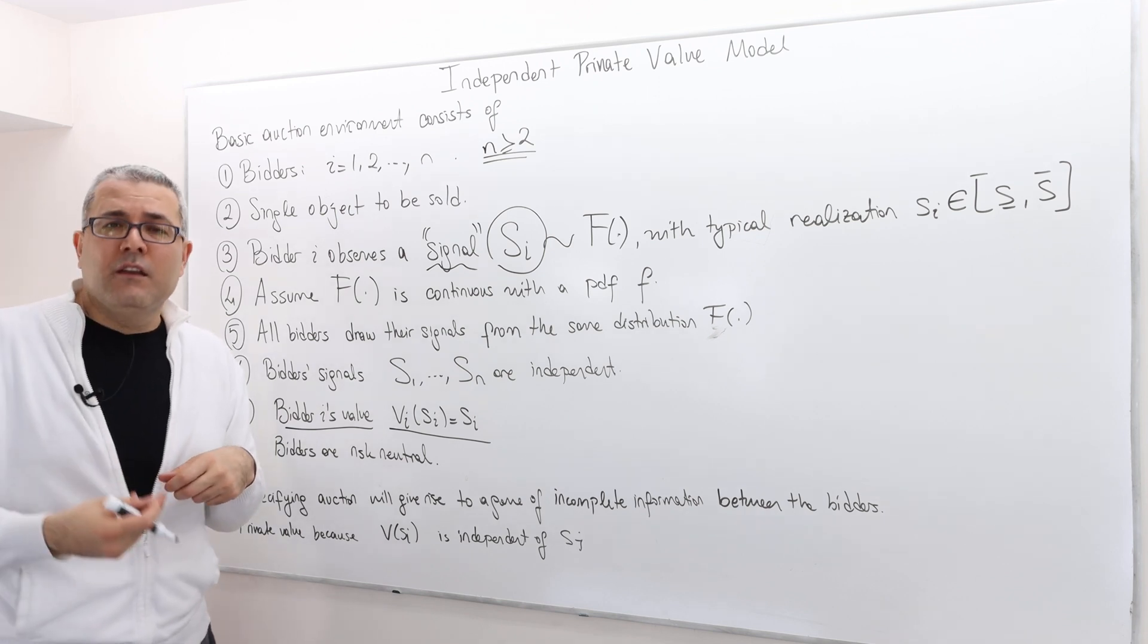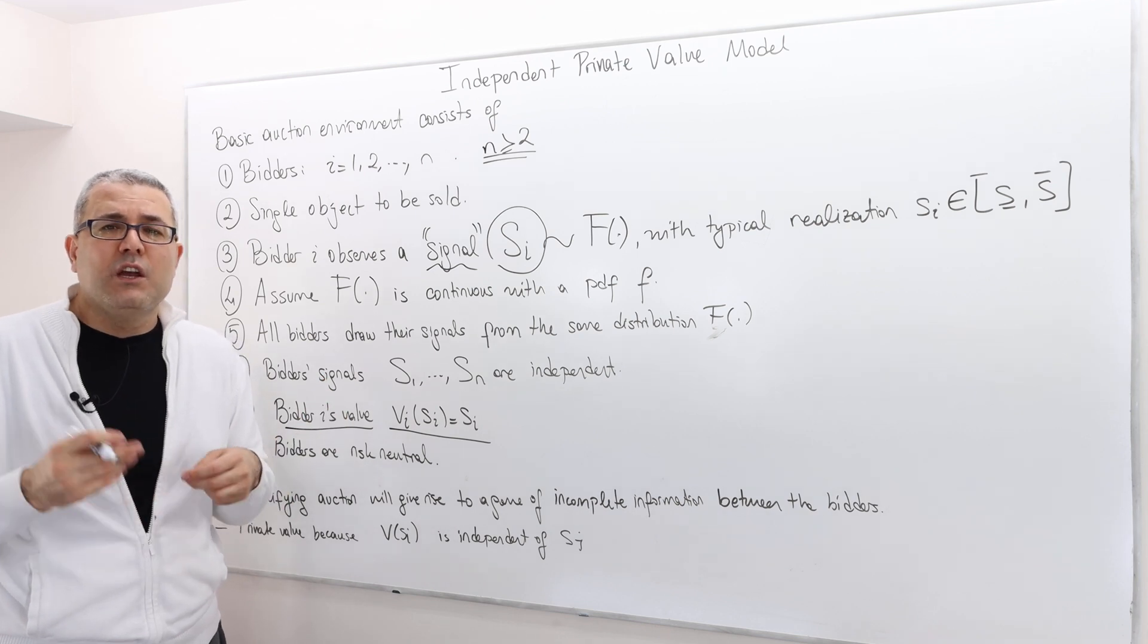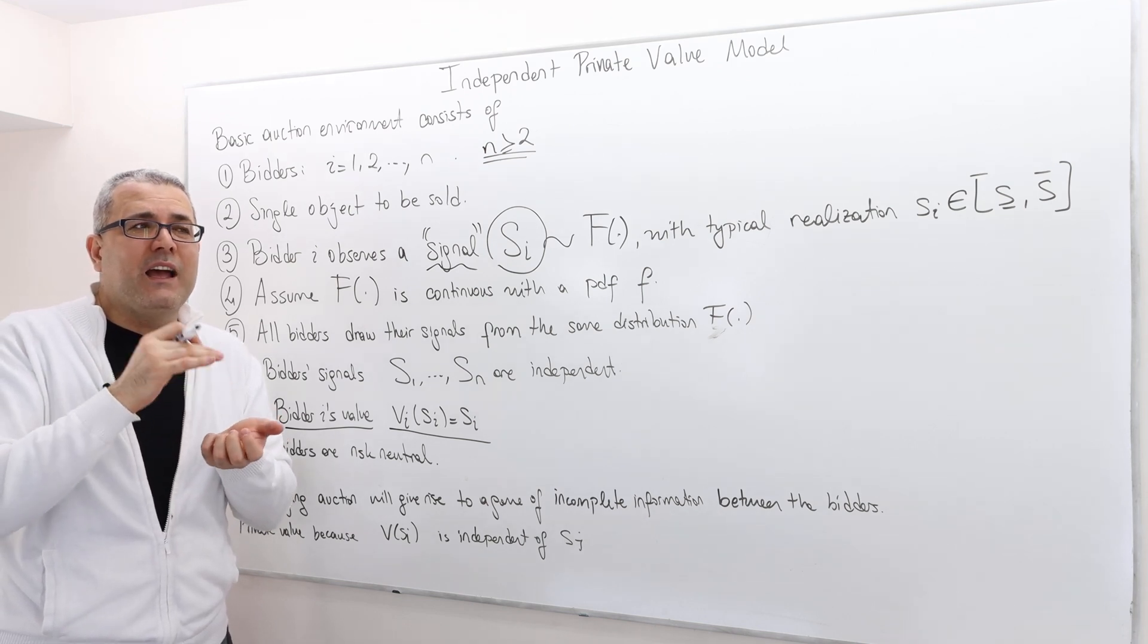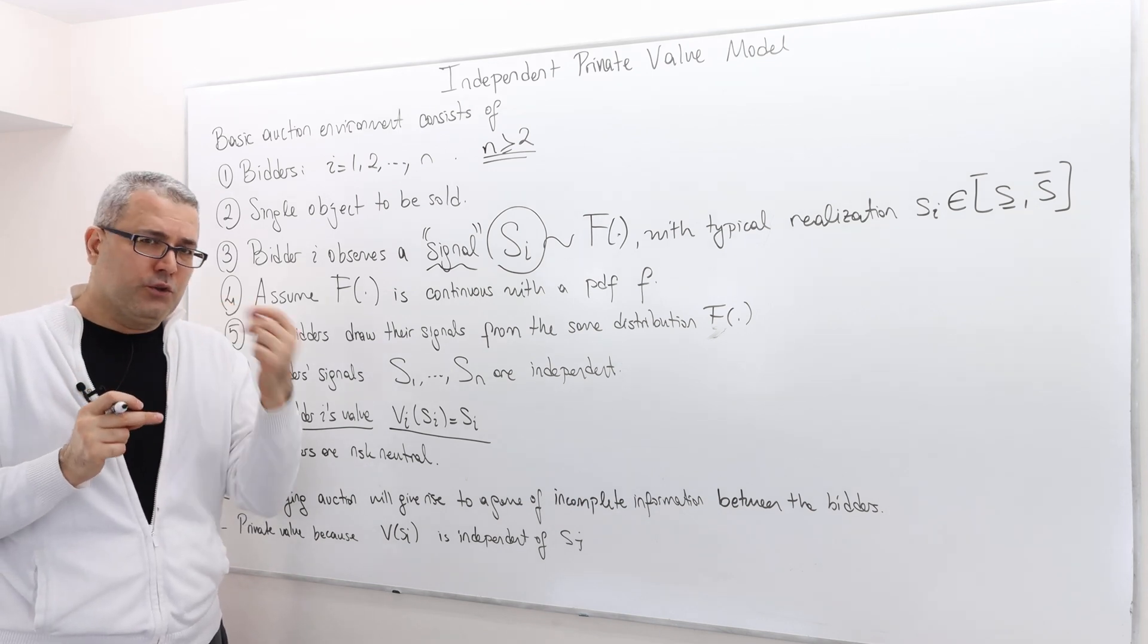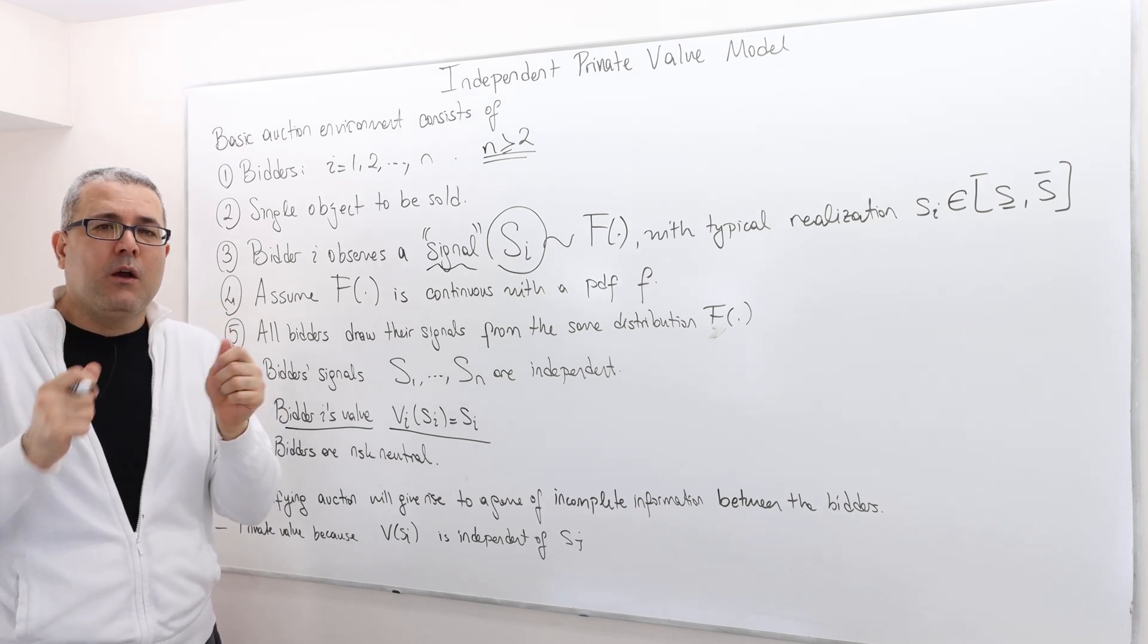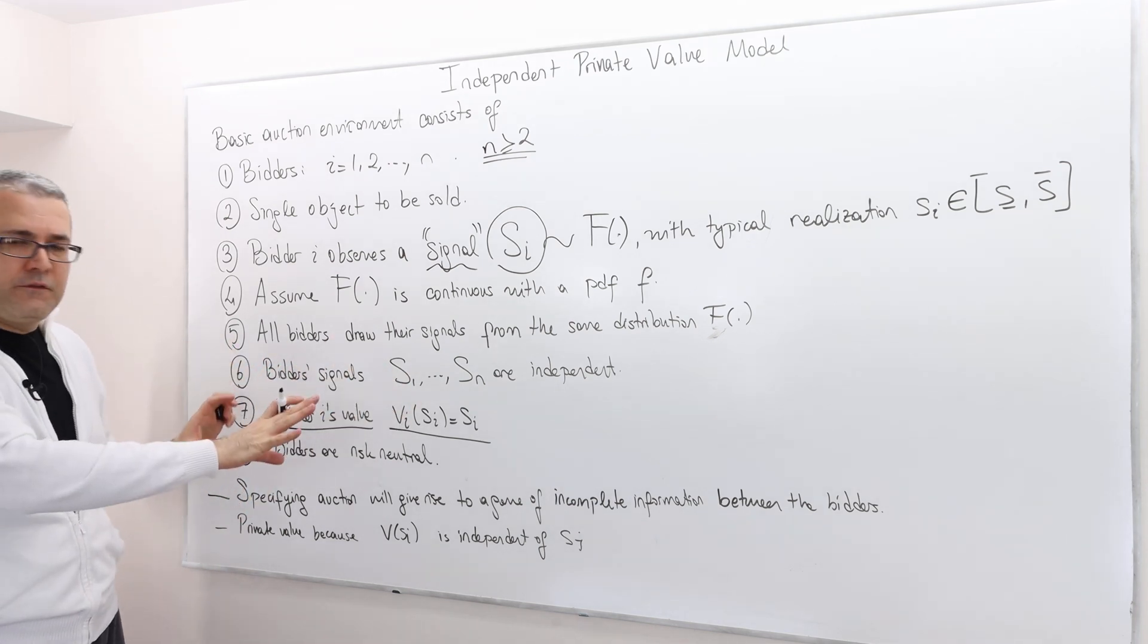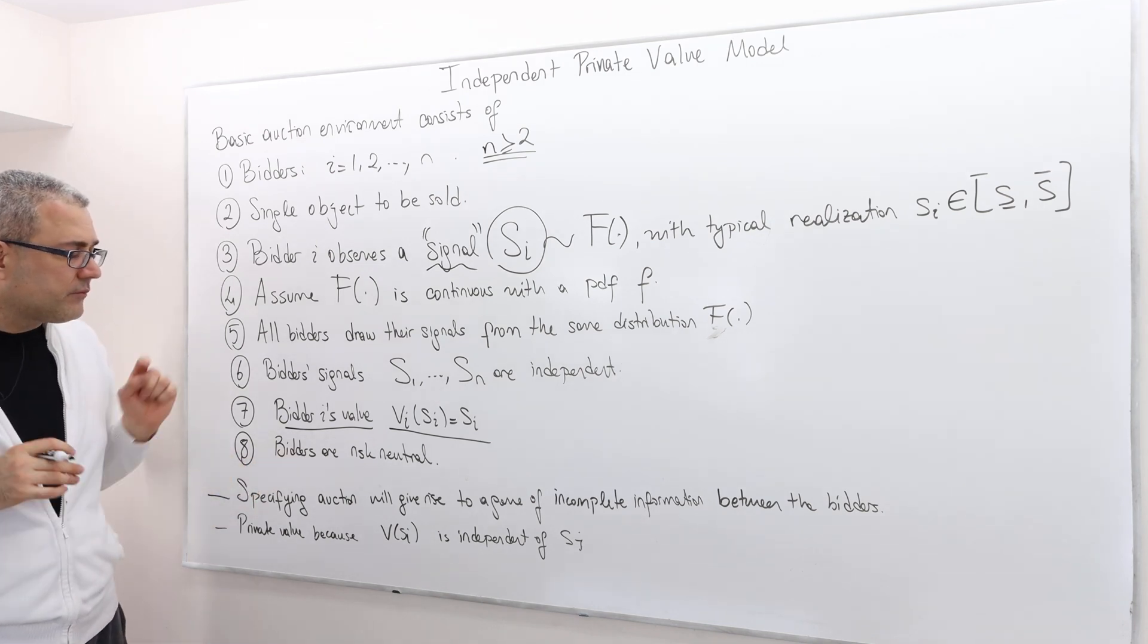What about the utility then for the bidders? I did not specify the utilities mainly because utilities depend on the auction rules. Who pays what depends on the auction rules. And so utility functions for the first price auction or for the second price auction or for the all-pay auction are not going to be the same. For that reason, I left the utility function out of this picture. But don't forget, the bidders are going to be risk neutral.